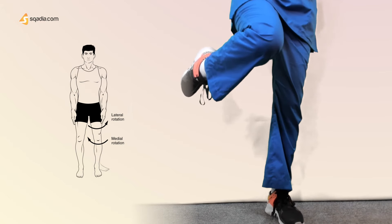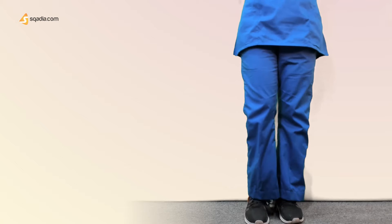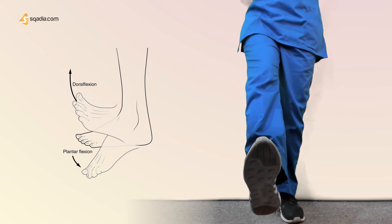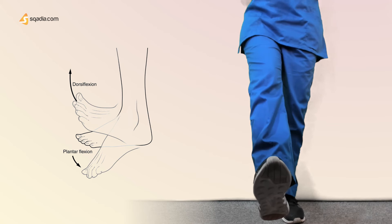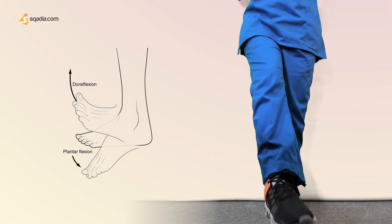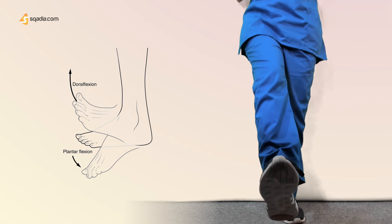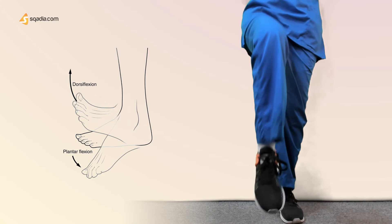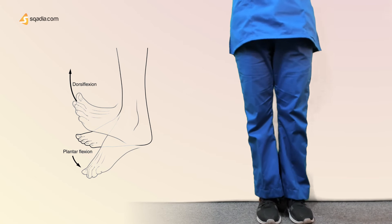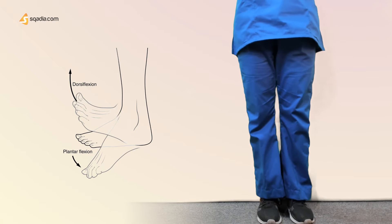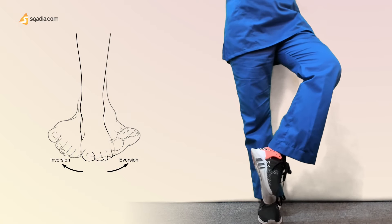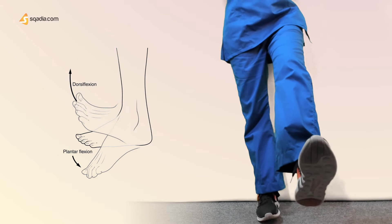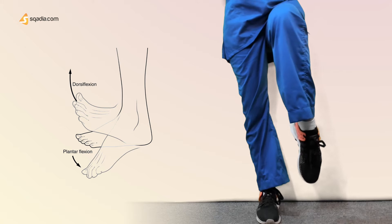At the ankle joint, we have four movements: dorsiflexion, plantar flexion, inversion, and eversion. Dorsiflexion is lifting your foot upward — the dorsal surface of the foot faces upward. Plantar flexion is pointing the foot downward. Inversion and eversion are the other two movements at the ankle joint.